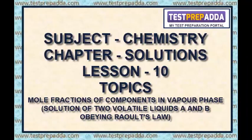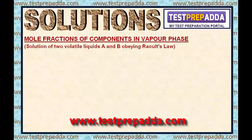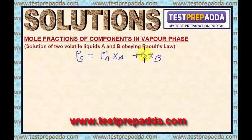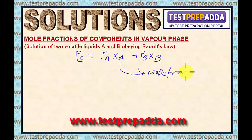This video is presented by www.testprepanda.com. Dear students, in the previous video session on solutions, I talked about Raoult's law. In that session, we learned how to find vapour pressure for a solution of two volatile liquids A and B. We learned that vapour pressure of solution equals P⁰_A·X_A plus P⁰_B·X_B, where P⁰_A and P⁰_B are vapour pressures of pure A and B, and X_A and X_B are the mole fractions of A and B in the liquid phase.